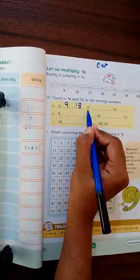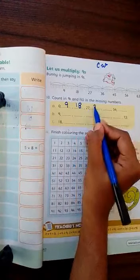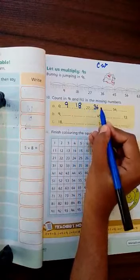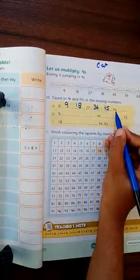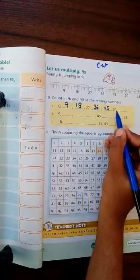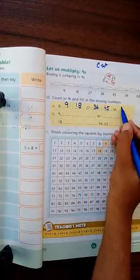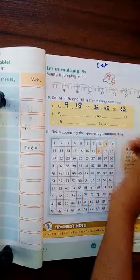You have to start again. 9 times 4 is 36, 9 times 5 is 45, 9 times 6 is 54. And 9 times 7 is 63, okay?